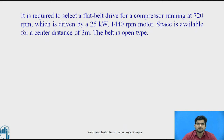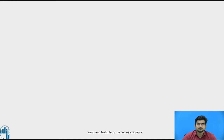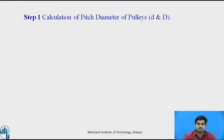Through this problem statement you will get the given data. In step number 1, calculate the pitch diameter of the pulleys. We have two pulleys — one smaller and one larger. For the smaller pulley we use the letter small d, and for the larger pulley we use the letter capital D.